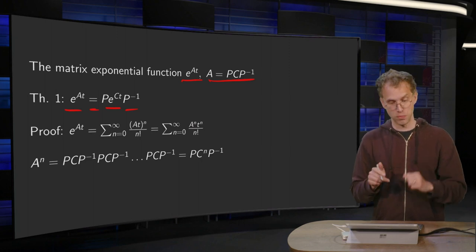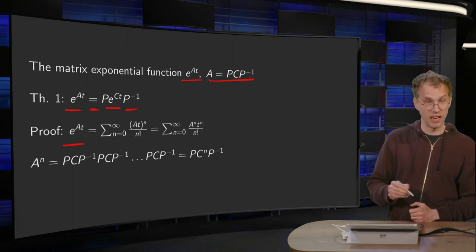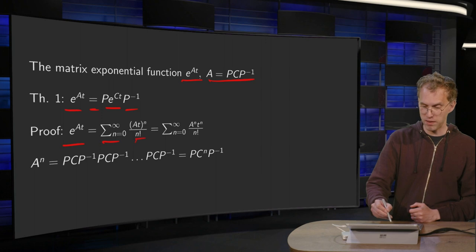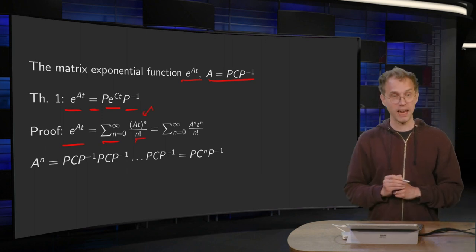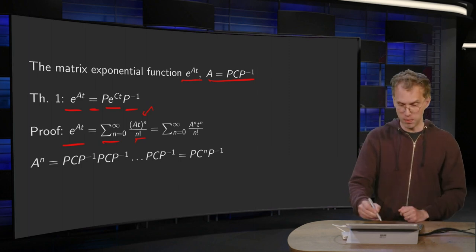Well, why is this? Small proof. Well, for e to the power at, you use a Taylor series. So sum 0 to infinity divided by n factorial, and then at to the power n. But at to the power n equals a to the power n times t to the power n.